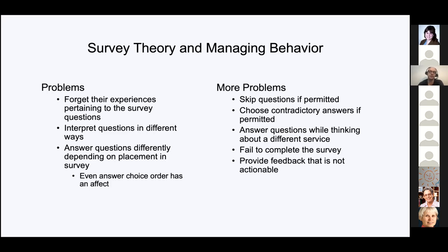Respondents will always interpret questions in different ways. There are methods to manage that, but we have to understand there will be some variability. A survey I take this week I may answer slightly differently next week when I re-remember an experience or think about the language differently. The methods we're employing here to get the most valid and reliable data are best practices, but they're not perfect solutions — every researcher encounters these problems, and there are methods to mitigate them.